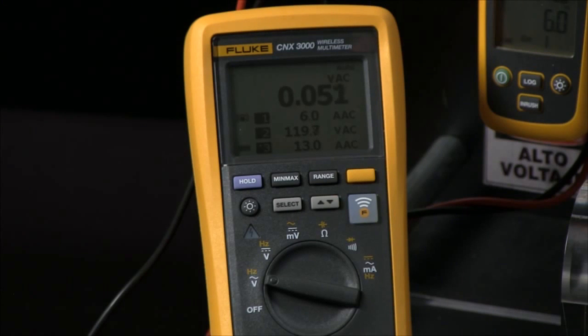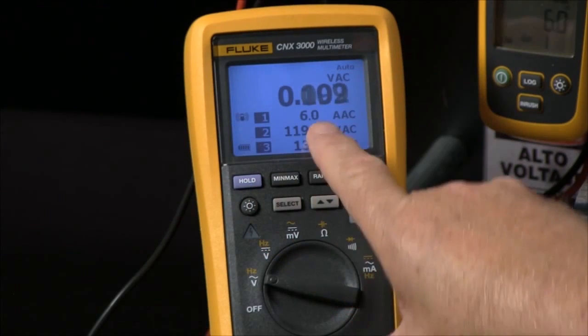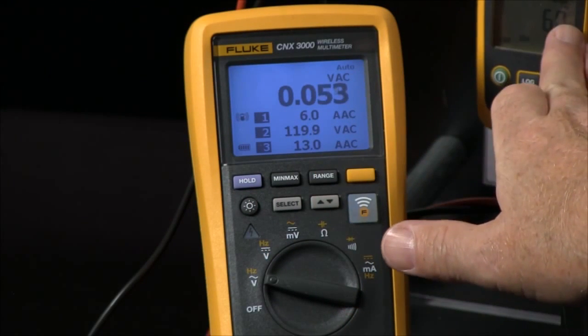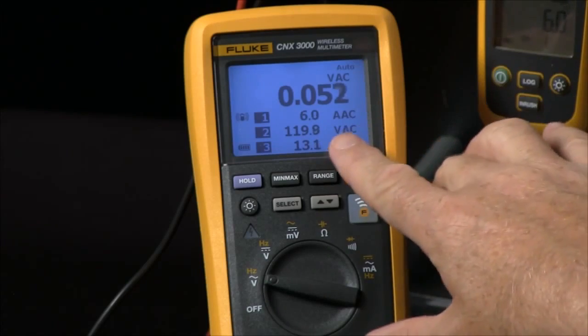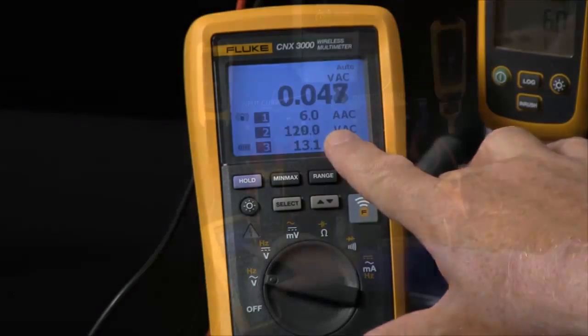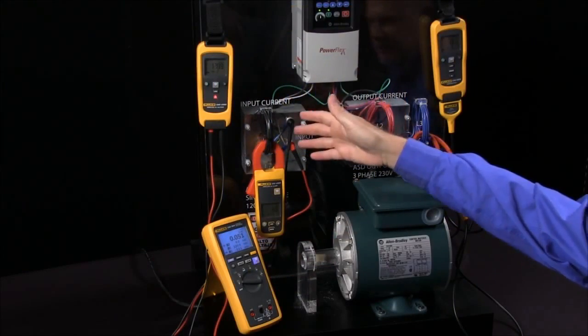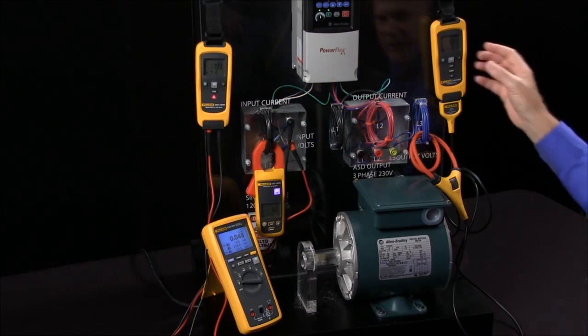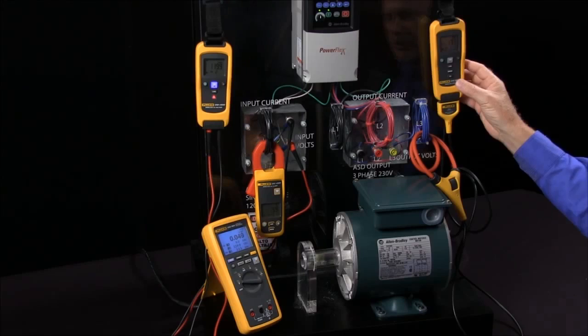Once they're selected, I could either wait or just hold in the arrow button for two seconds and it will turn them on. Here we can see we have six amps coming in to the input of the drive. We have 119.9 volts being measured at the input going into the drive.